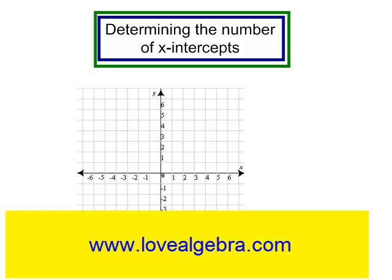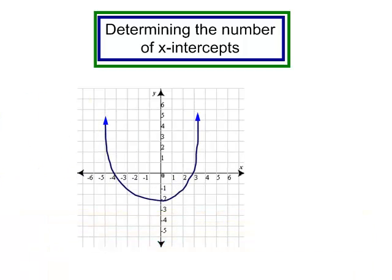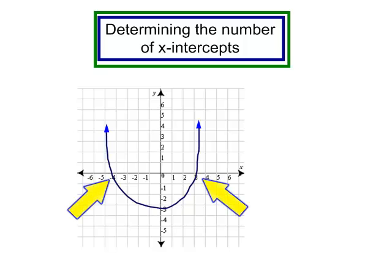We are going to be determining the number of x-intercepts. If I have a quadratic equation, which is a parabola, it may cross my x-axis two times, which means I have two x-intercepts, or two roots.